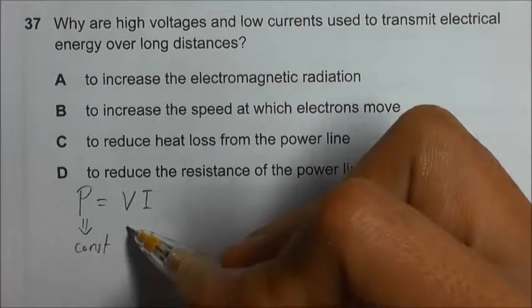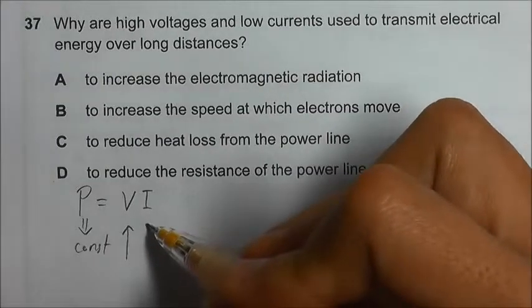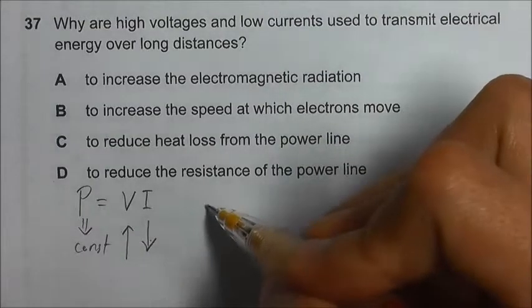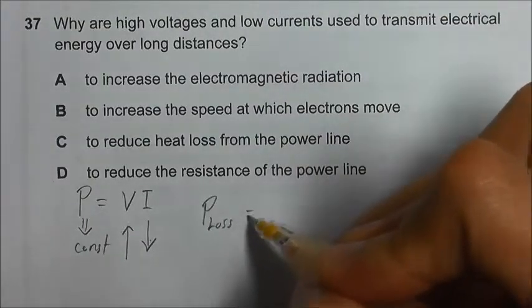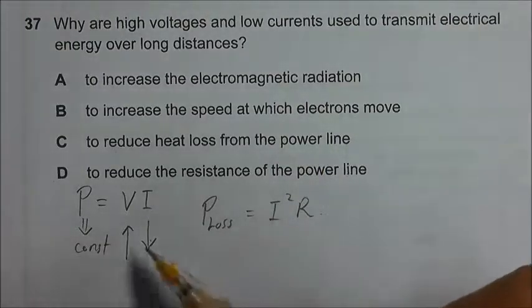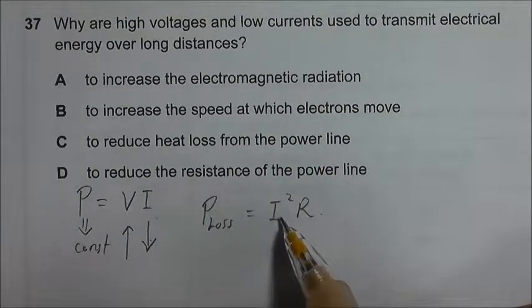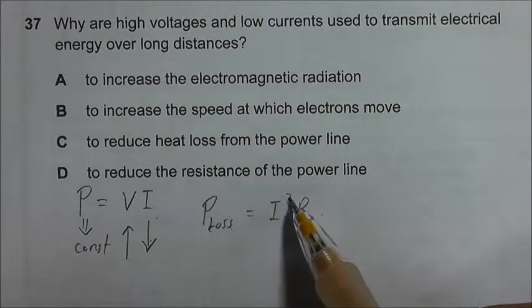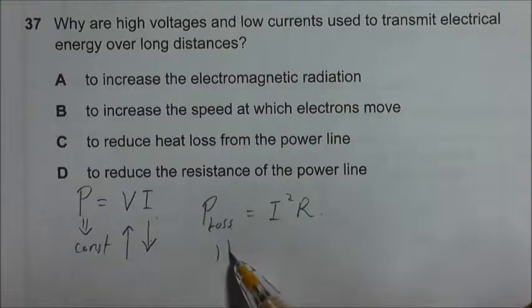So if you want to step up the voltage, you will decrease the current. And the power loss in the transmission cable is equal to I squared R. So if you reduce the current, which includes the square of I, the power loss will be very much reduced.